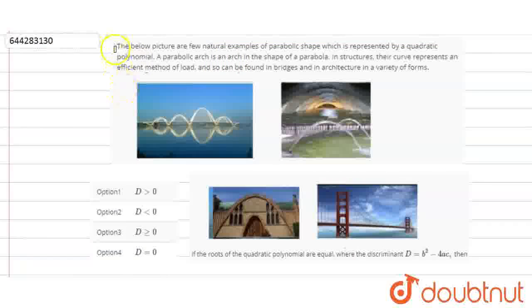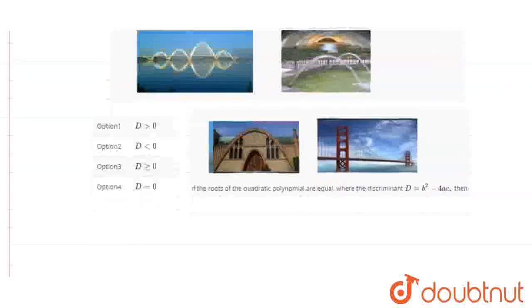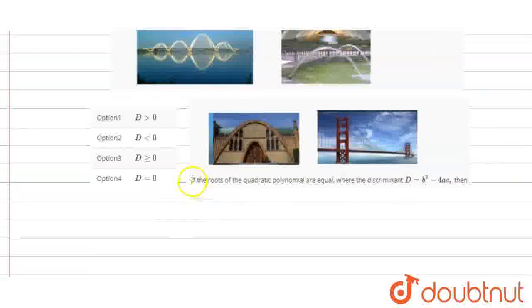So in this question, we are given that below these pictures have a natural example of parabolic shapes, and we have a parabolic arc is an arc in a shape of a parabola. These figures are given in the shape of parabola. If we see this, we are given the question as: